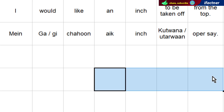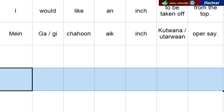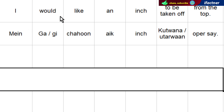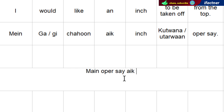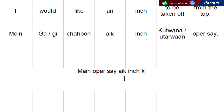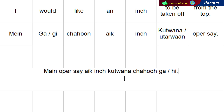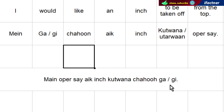Now let's make a sentence. We can say: subject first, then the object, then the predicate, verb at the end. 'Mein ooper se ek inch katwana chaahoon ga' for male, or 'chaahoon gii' for female. If I am female: 'mein ooper se ek inch katwana chaahoon gii'.